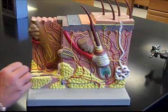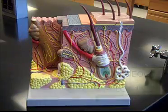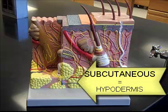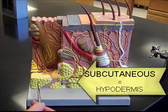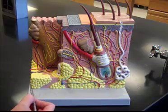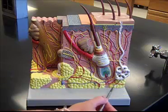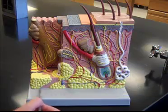Below the skin is what we call the subcutaneous layer. The subcutaneous layer is also known as the hypodermis. That's all of this adipose tissue — that's fat underlying the skin.